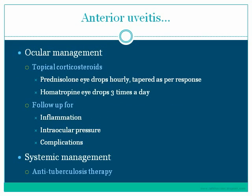Ocular management included topical corticosteroids and cycloplegic mydriatic agents. Prednisolone eye drops were used at high dosage — as frequently as hourly — then tapered as per response. Since there was hypopion and the pupil appeared bound down, a stronger and longer-acting cycloplegic mydriatic agent was required, so homatropine or atropine was used — homatropine three times a day. The patient was followed up for resolution of inflammation via slit lamp, assessing keratic precipitates, cells, and hypopion, as well as for intraocular pressure, which could be raised due to trabeculitis or steroid use.